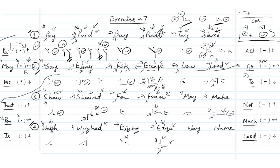Next we have 'nay' — 'n' then the 'a' vowel. Simply make 'n' then put a high dot. That's 'nay'. Finally we have 'name' — 'n', then the 'a' vowel, then the final 'm'. That was all about it. I'll see you in the next video.